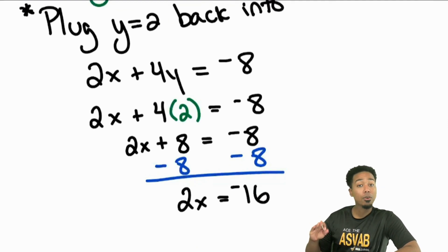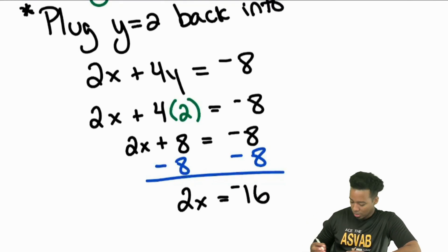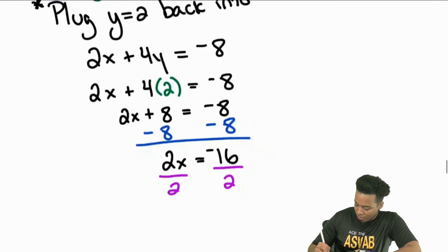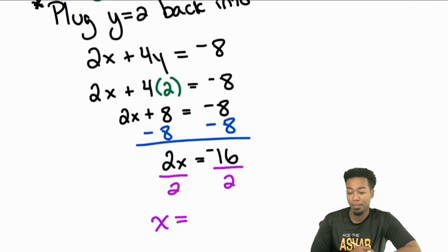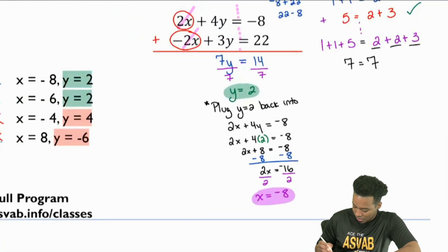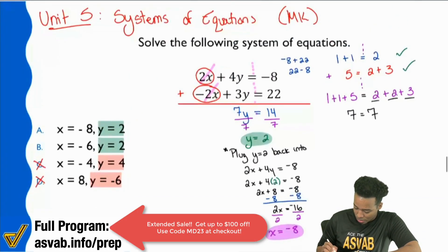And now from this point, we're just treating this like we're solving an equation. And so we'll divide both sides by 2. Everyone, negative 16 divided by 2 is going to be what? That's going to be negative 8. And that's going to be your value for X. And we see that that's the value that's shown right here. And that's what makes A the correct answer.